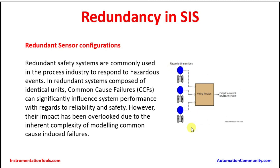This is a redundant configuration of three sensors used in an application. All three sensors are identical, measure the same process parameter, and then the signal is given to the logic solver. In the logic solver, there is a voting function which does an averaging, or it selects the maximum, or selects the minimum. Most probably it uses the mid-of-three value, does the required calculations, and gives an output according to the process conditions.